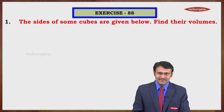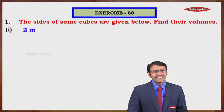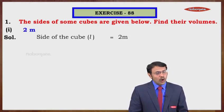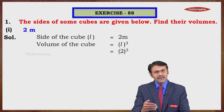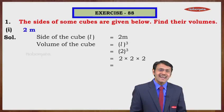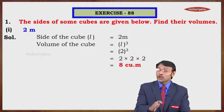Let us have a few examples based on the cube, from Exercise 8, question number one. The sizes of some cubes are given — find their volumes. We have just studied the formula: volume = L³. If side is 2 meters, volume = 2³ = 2 × 2 × 2 = 8. Don't forget to mention the units: cubic centimeters.